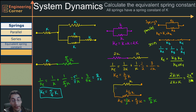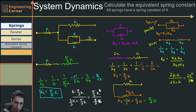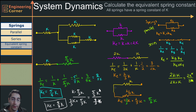I'll also verify using the product-over-sum method: k times 5/3 k over k plus 5/3 k. Adding the denominator with a common factor of 3 over 3, I get 8/3 k in the denominator, and the numerator is 5/3 k squared. After canceling a factor of k, this simplifies to 5/8 k — the same result. Both methods work, so use whichever you prefer. Hopefully this video has helped you learn how to simplify a system of springs to find the equivalent spring constant.